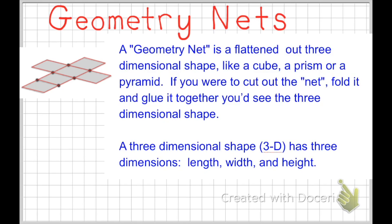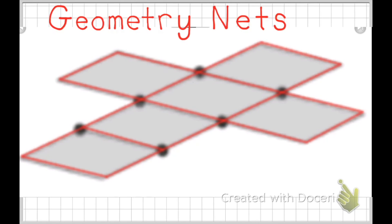A three-dimensional shape has three dimensions: length, width, and height. Here's an example of a geometry net for a cube.